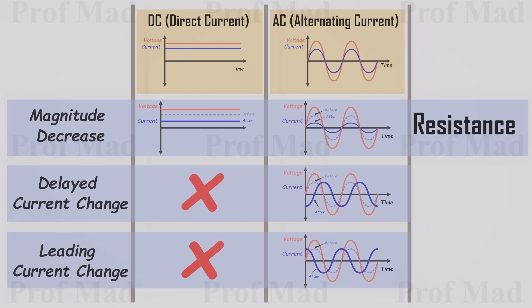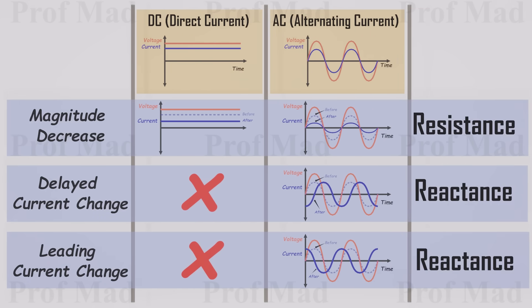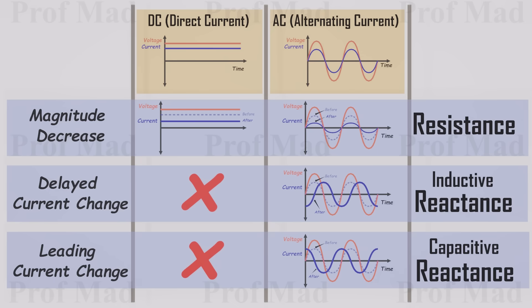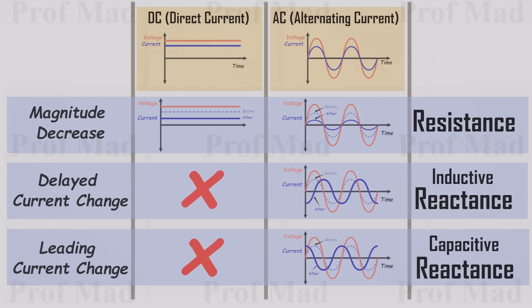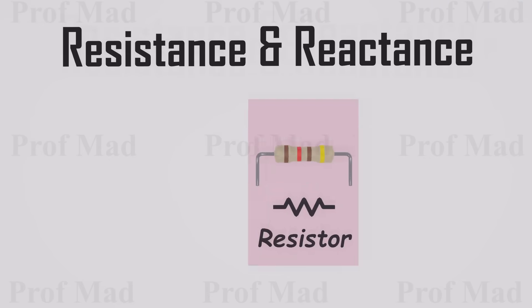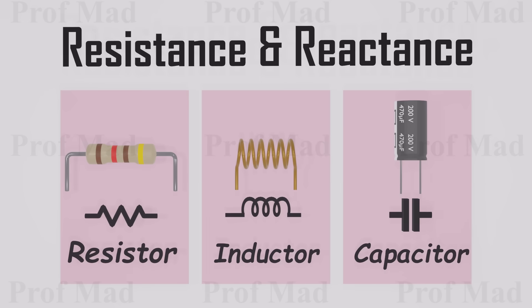We say the first type of current change is due to the resistance of a component. The second and third types of changes occur due to the reactance of the components. More specifically, inductive reactance causes the current to lag behind the voltage, while capacitive reactance causes the current to lead the voltage. Now let's discuss resistance and reactance. To gain a better understanding of these concepts, we need to explore the behavior of resistors, inductors, and capacitors. Let's try to grasp these concepts using a water analogy.